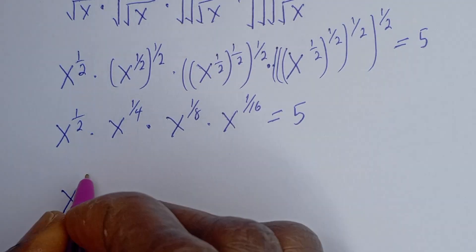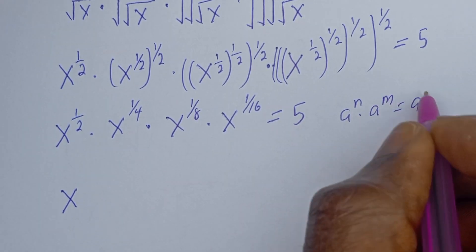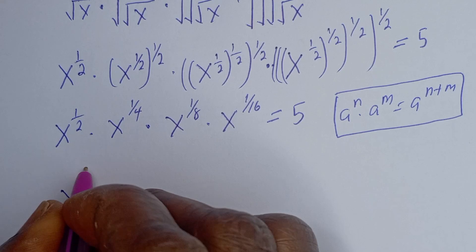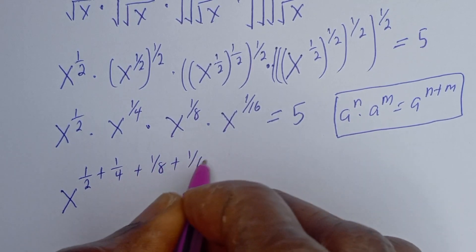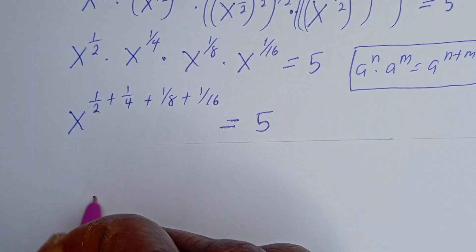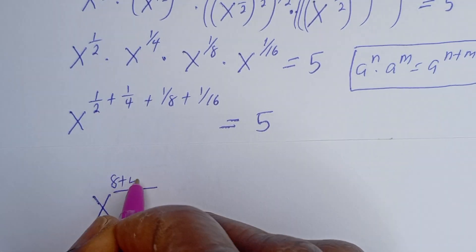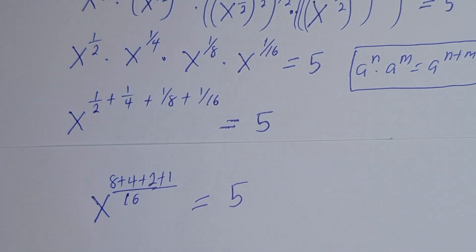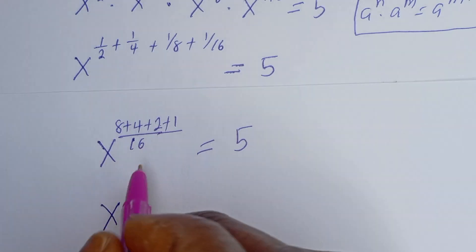Using the rule that a to the power of l multiplied by a to the power of m equals a to the power of l plus m, this can be written as s to the power of 1 over 2 plus 1 over 4 plus 1 over 8 plus 1 over 16, is equal to 5. The common denominator here is 16, so the numerator is 8 plus 4 plus 2 plus 1, which gives s to the power of 15 over 16 equals 5.